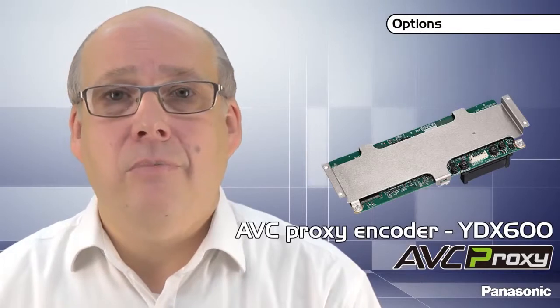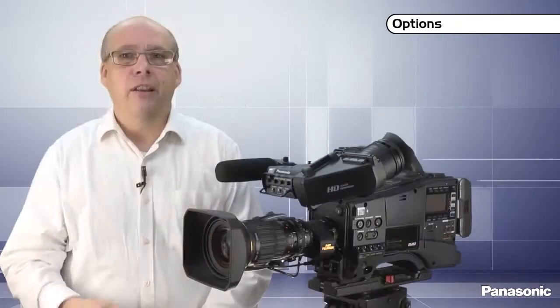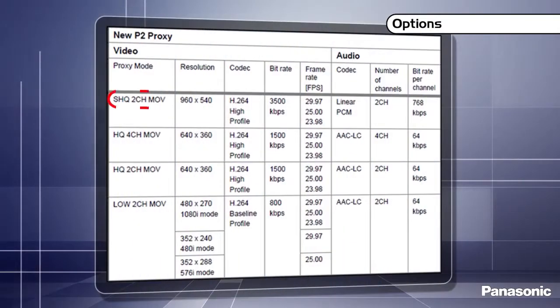The second hardware option, the YDX600 proxy recorder card, records low resolution images at low bit rates. The images are recorded onto the P2 card and can also be recorded at the same time onto an SD card. Proxies are encoded in H.264 and wrapped in QuickTime file format.